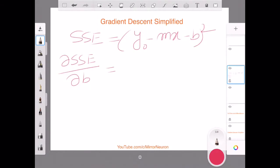So again, this will look very similar. If I take z squared, it will be 2 times z and the derivative of z. This is nothing but 2 times y naught minus y predicted. Y predicted is mx plus b, and I want to see the derivative of y naught minus mx minus b with respect to b.